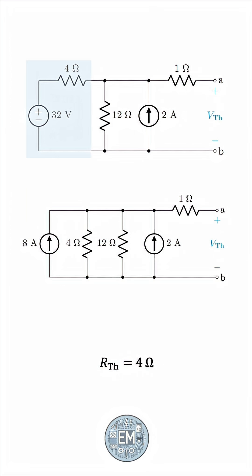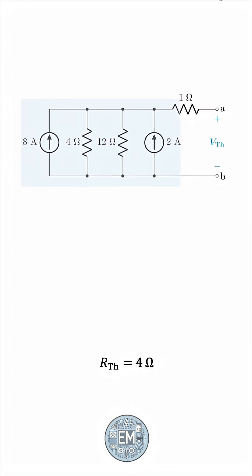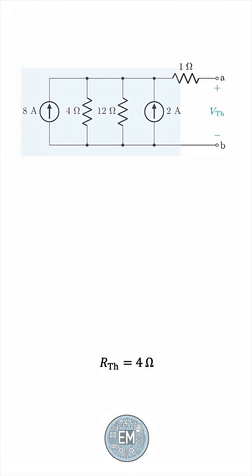I believe it's now clear why I opted for source transformation. We have two current sources in parallel, and two resistors in parallel, so we can simplify the circuit a great deal. The equivalent current source would be 8 plus 2, which is 10 amperes, and the 4 and 12 ohm resistors in parallel give 3 ohms.